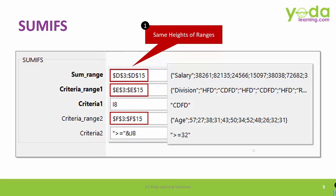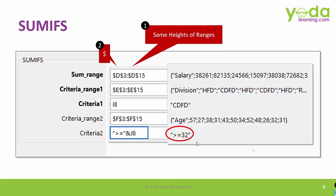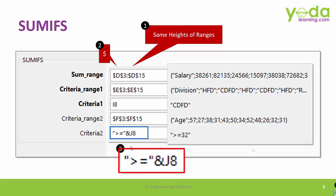All ranges should be fixed or locked using dollar signs. This is crucial when you copy-paste the formula to get multiple results. If you have any mathematical operator-based criteria such as more than or equal to, the syntax goes like this: start with double quotes, put the operator, close the double quote, then put an ampersand to join the operator with the value inside a given cell. This is where people make most mistakes.